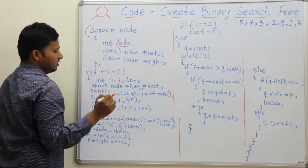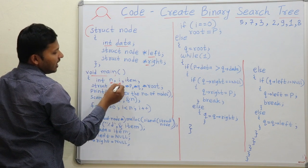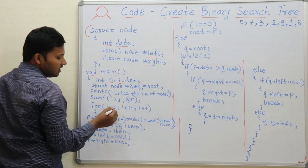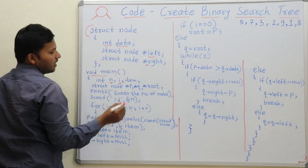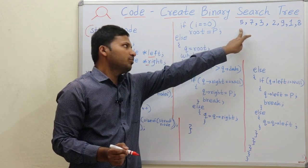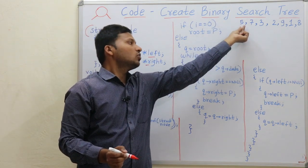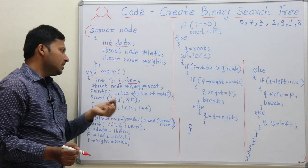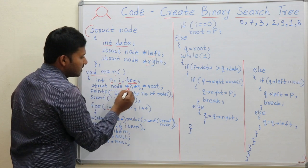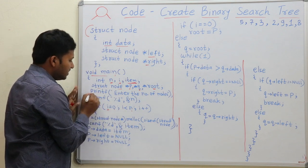Now let us go to the main function. Inside the main function we have declared n, that is the number of nodes. Then i, which will trace the number of nodes — we will use i for going from node 0 to node n. And item means the value of that node. So suppose these are the elements to be inserted in the binary search tree. We have three pointers: struct node star p, q and root.